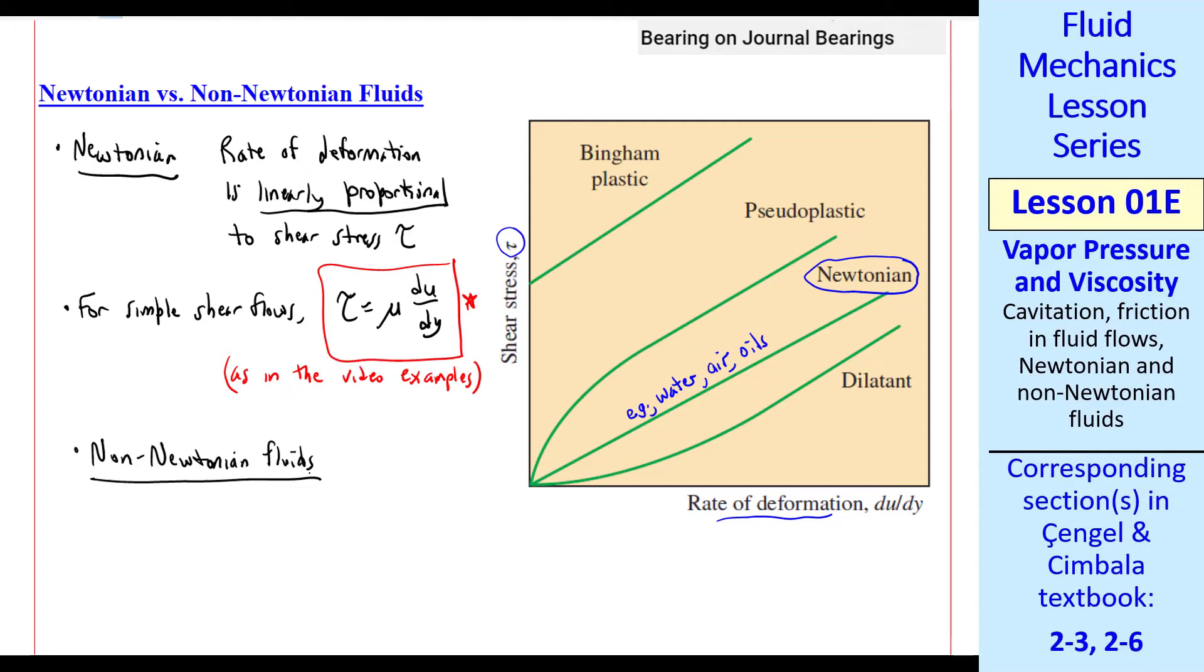Some fluids are non-Newtonian, in which tau and the rate of deformation are not linearly related. We show several examples in this little diagram. A dilatant fluid is called shear thickening. By the way, viscosity is proportional to the slope of this curve. The viscosity increases as dU/dY, or rate of deformation, increases. An example of a dilatant fluid is starch in water, or quicksand.